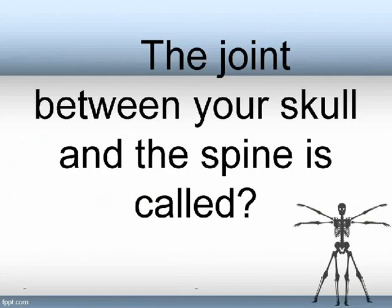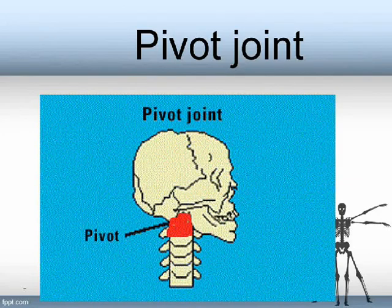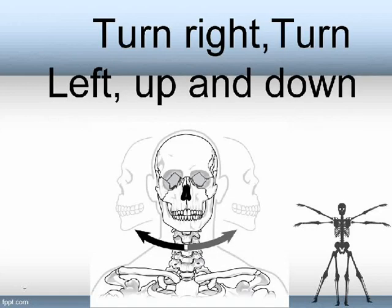The joint between your skull and the spine is called a pivot joint. What are the movements of a pivot joint? Turn right, turn left, up and down.